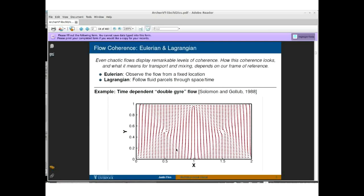So what are Lagrangian coherent structures? I think the easiest way to introduce this is to consider a very simple example and prompt us to think about coherence from different frames of reference. From the Eulerian frame where we observe the flow from a fixed location in space and time, or the Lagrangian frame where we follow fluid parcels through space and time. The idea being that even chaotic flows display remarkable levels of coherence, but how this coherence looks and what it means for transport and mixing depends on our frame of reference. I've shown here a little vector field, two counter-rotating vortices in a rectangular domain, the double gyre flow, used as a toy example to understand geophysical flows.